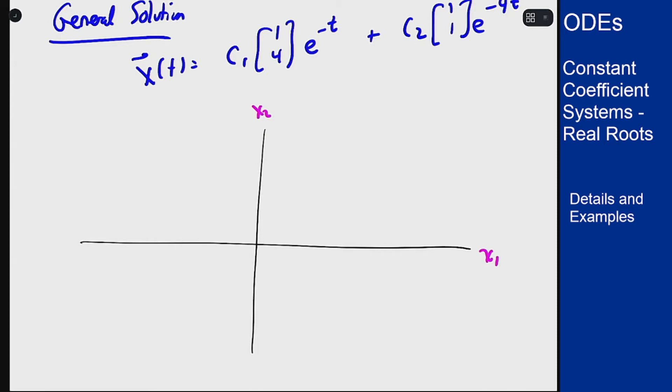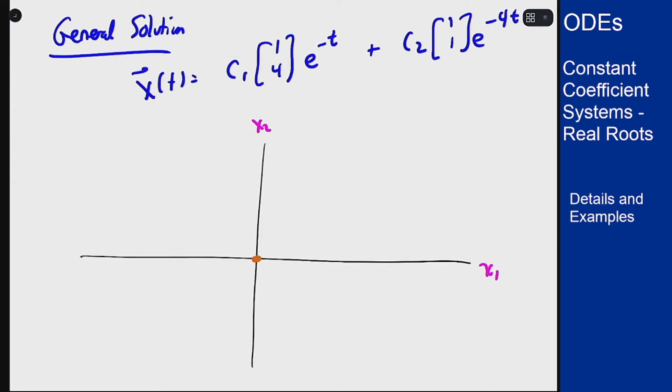Now there are a couple things I can draw in here right away. First, this has the equilibrium solution at zero, so I'll put a dot there. For all your problems this will be the only equilibrium solution you have, the one at zero.